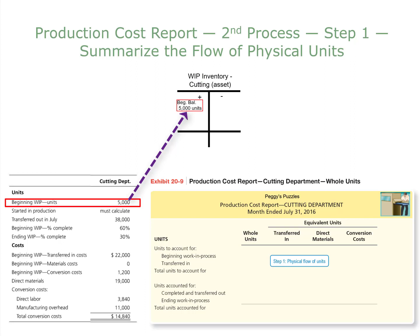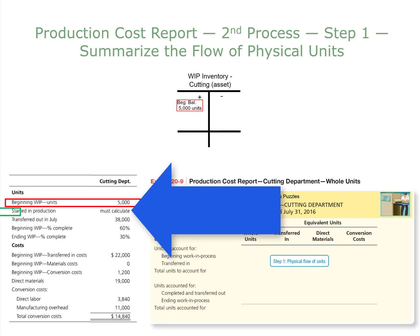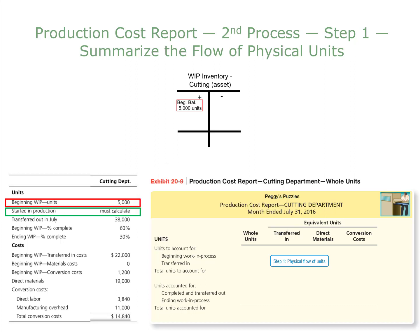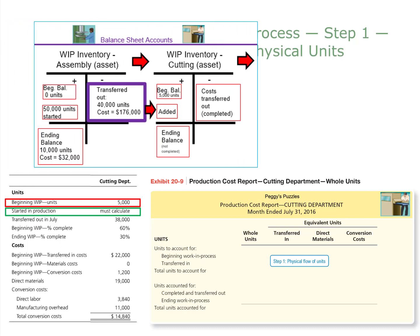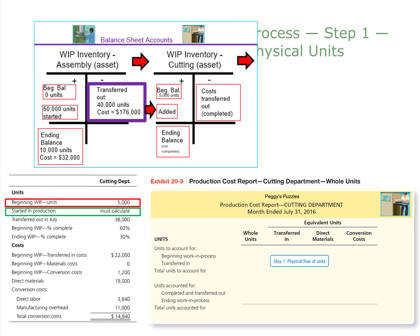The next part of our data table says that we must calculate the units started in production. Since this is the second process, the units started are the number of units transferred in from the previous department. As shown on our previous slide, 40,000 units were transferred in. So these 40,000 units transferred out of the assembly department will be transferred in to the cutting department. The costs are also transferred in, but we are only working with units for now.